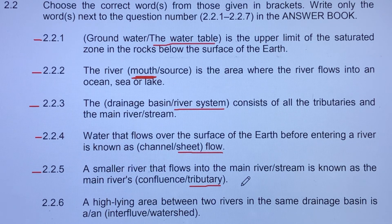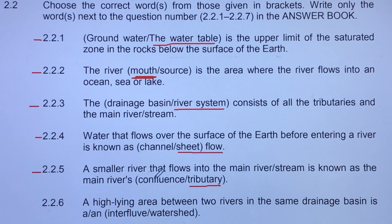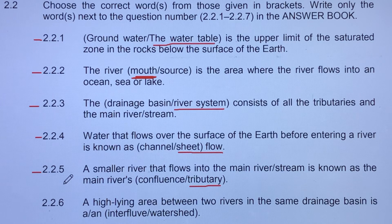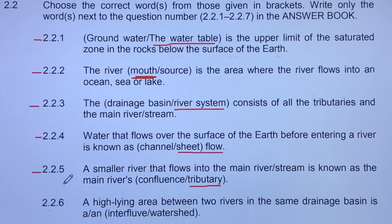Tributaries are those small streams that pass water to the main stream or main river. When you talk about a confluence, a confluence is a point where the water bodies from the tributary meet the water bodies in the mainstream.